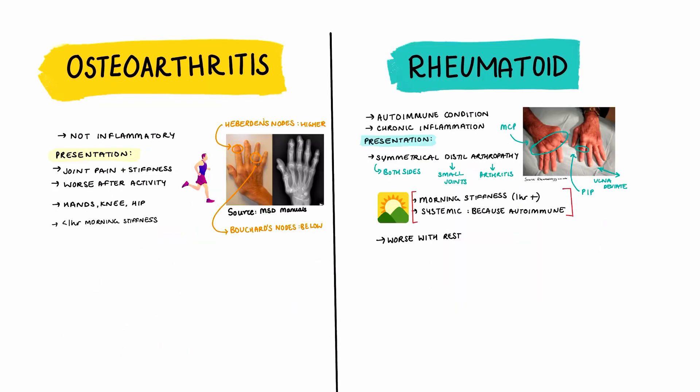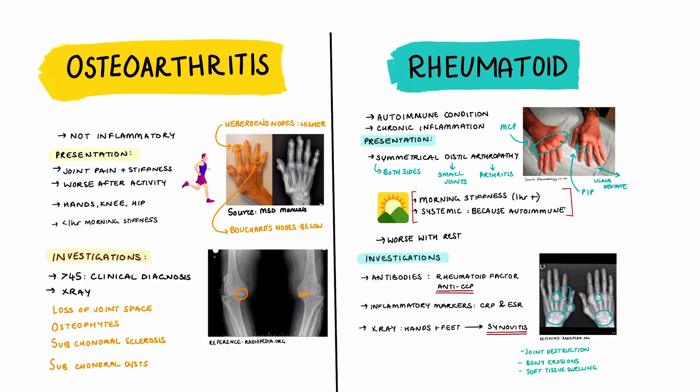Now for a quick summary between osteoarthritis and rheumatoid arthritis. In terms of presentation, osteoarthritis is a non-inflammatory disease causing joint pain and stiffness that's worse after activity. Whereas rheumatoid arthritis is an autoimmune inflammatory condition causing symmetrical arthropathy that's worse with rest and better with exercise. For both conditions we use x-ray imaging to look at the joints, however for rheumatoid arthritis we also investigate antibodies.